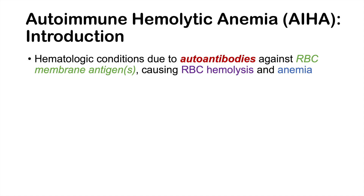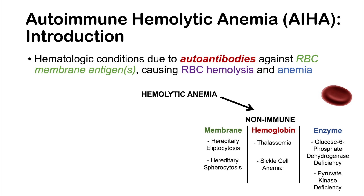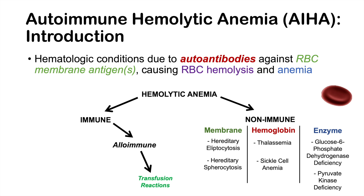Hemolytic anemia is an anemia — a low hemoglobin — caused by red blood cell hemolysis. In this instance it's autoimmune, meaning autoantibodies cause red blood cell destruction. Hemolytic anemia is a generic term with many causes. There are a large group of nonimmune causes including membrane, hemoglobin, and enzyme causes, and then immune causes split into alloimmune — from transfusion reactions — and autoimmune, which is where this lesson focuses.